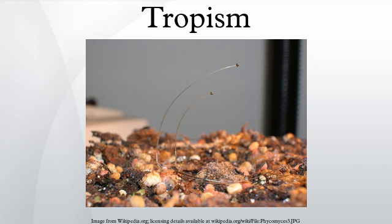Types of tropism include: Chemotropism, movement or growth in response to chemicals; Geotropism, movement or growth in response to gravity; Heliotropism, diurnal or seasonal motion of plant parts in response to the direction of the Sun; Hydrotropism, movement or growth in response to water; Phototropism, movement or growth in response to light or colors of light; Thermotropism, movement or growth in response to temperature; Electrotropism, movement or growth in response to an electric field.